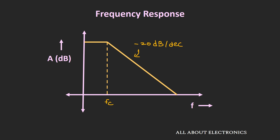The cut-off frequency is the frequency where the gain of the op-amp will reduce by 3 dB. In this frequency response, the y-axis represents the voltage gain of the op-amp and the x-axis represents the frequency in a logarithmic scale. As you can see in this frequency response, the cut-off frequency of the op-amp is very low and it is typically in the range of 10 to 100 Hz.